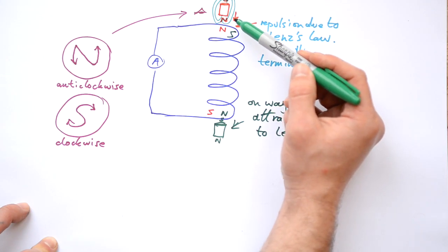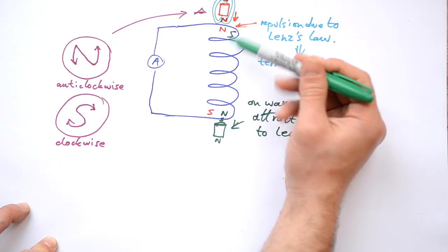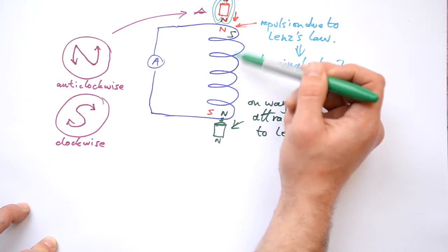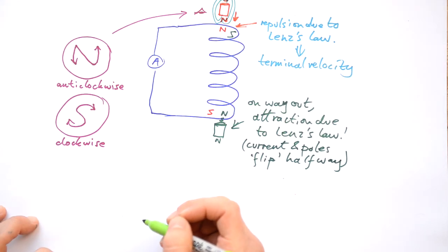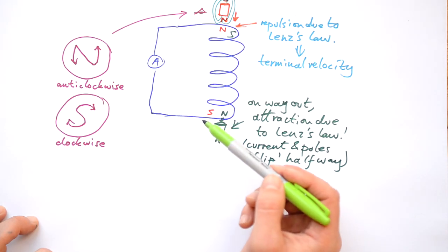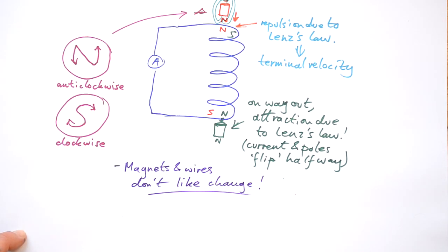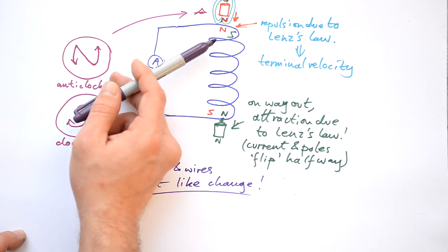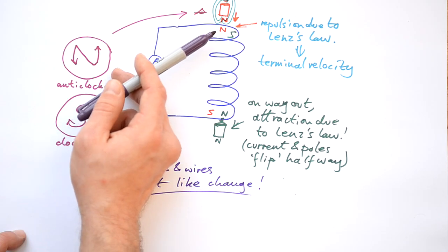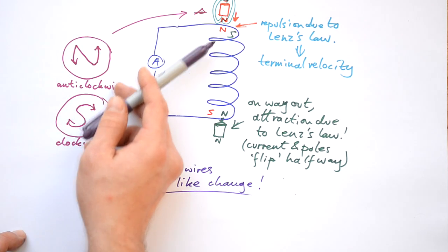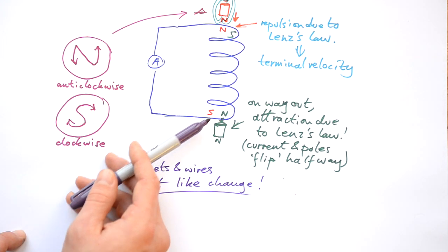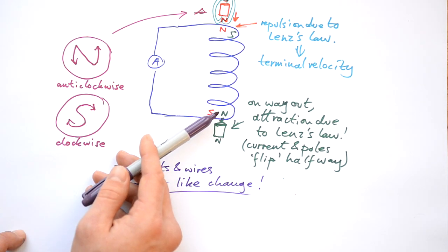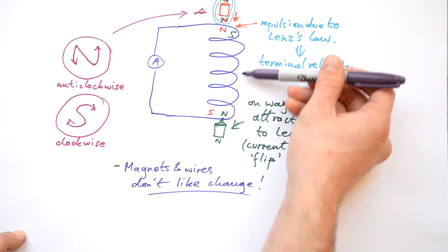That means that between the magnet entering and exiting the coil, we have a complete flip of the magnetic field induced in the solenoid. The current starts going one way, then halfway through it flips and goes the other way. Lenz's law: the direction of the induced current is such that it will oppose the change that caused it — magnets and wires don't like change. So: magnet comes in, flux cuts the wire, a current is induced, that produces a magnetic field opposing the magnet's entry. As it exits, the current reverses, the field flips, and the solenoid attracts it. The magnet's velocity remains constant throughout.